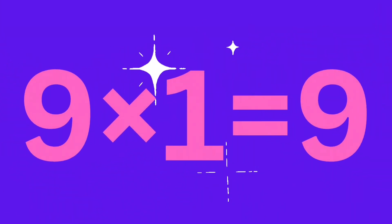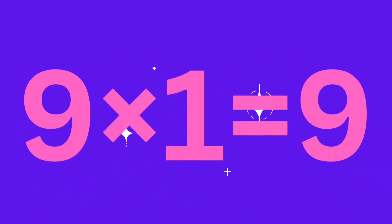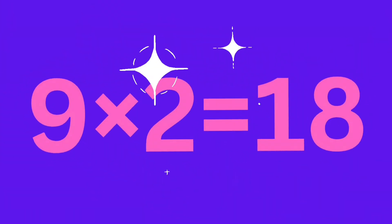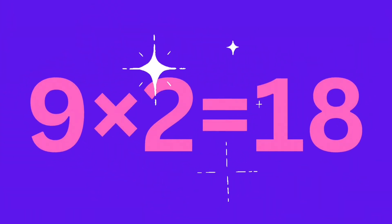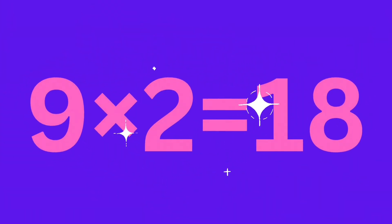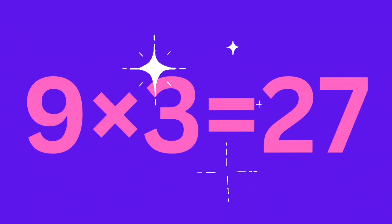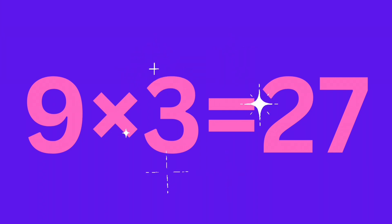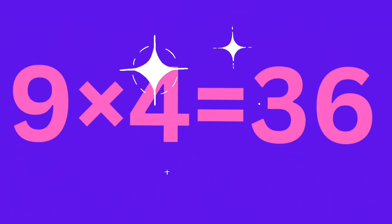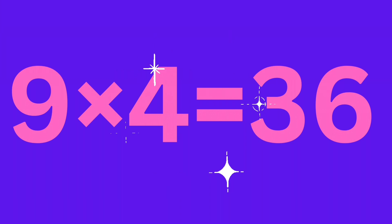9 ones are 9. 9 twos are 18. 9 threes are 27. 9 fours are 36.